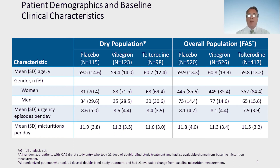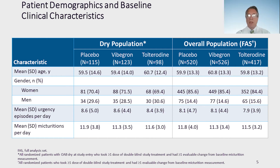Patient demographics and baseline clinical characteristics are shown on this slide. The dry population and overall population are the two subgroups. The characteristics of mean age, gender, mean urgency episodes per day, and mean micturitions per day are shown. As you can see, the distribution is appropriate and even in all comparable groups.